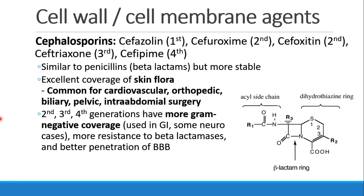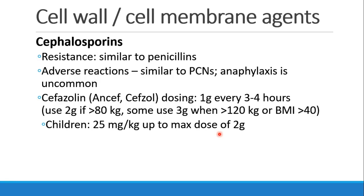As we get to higher generation drugs, they tend to have more gram-negative coverage, which would make them better in GI or neuro cases, as well as more resistance to beta-lactamases and better penetration of the blood-brain barrier. Nevertheless, in our institution, we routinely use cefazolin, which is a first generation cephalosporin, for neurological procedures. The drug you see the most is cefazolin, also called Ancef or Kefzol. We usually give one gram every three to four hours, going up to two grams if they're more than 80 kilograms, and we use three grams when patients are greater than 120 kilograms. The dose in children is 25 milligrams per kilogram, up to a maximum dose of two grams.